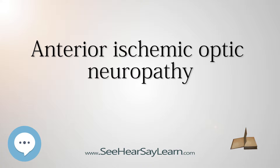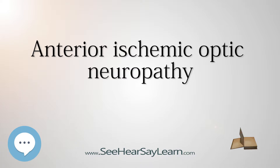Beyond this introduction, this article will focus on nonarteritic ION. For a discussion on arteritic ION, see the separate article on arteritic anterior ischemic optic neuropathy. Though the term ION can be used to describe either anterior ischemic optic neuropathy in general or nonarteritic ION specifically, in this article NAION will be used to refer to nonarteritic anterior ischemic optic neuropathy.